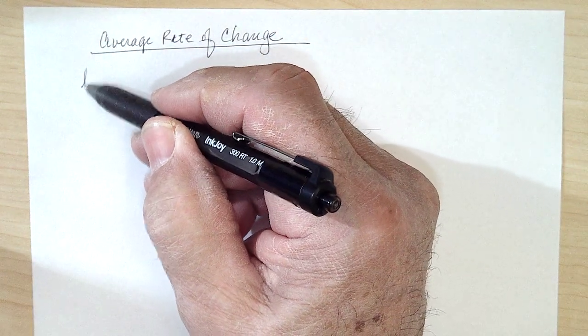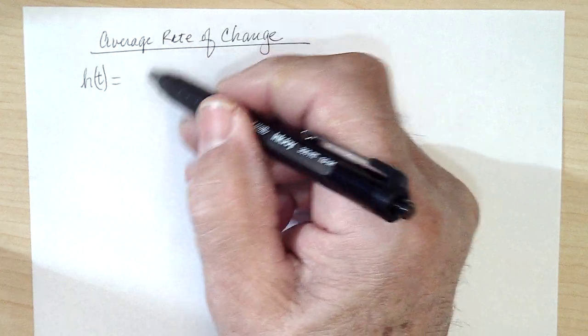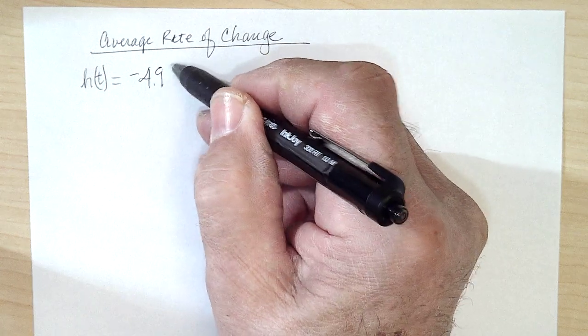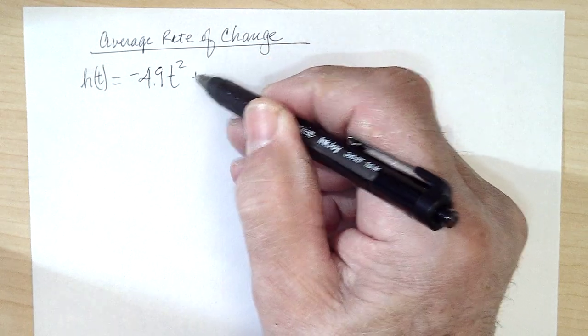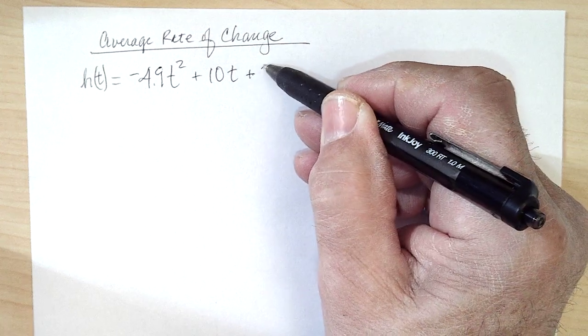If I write the height of the object as a function of time, it would be h(t) = -4.9t² + 10t + 25.